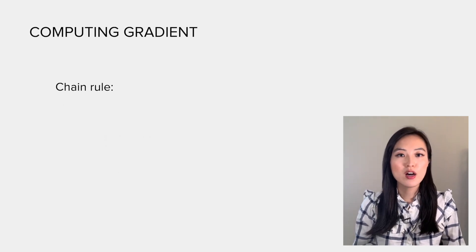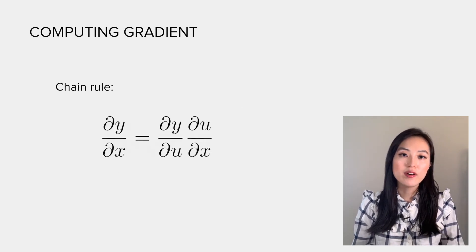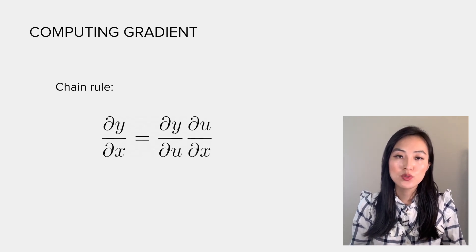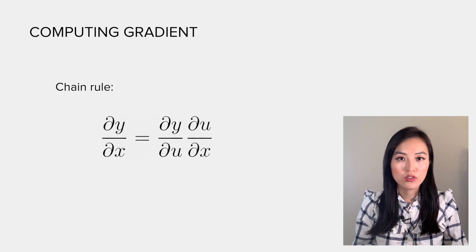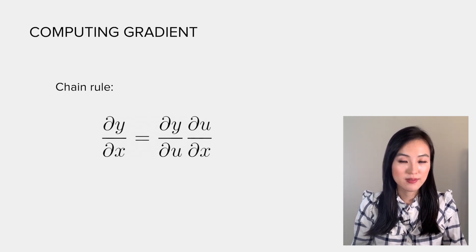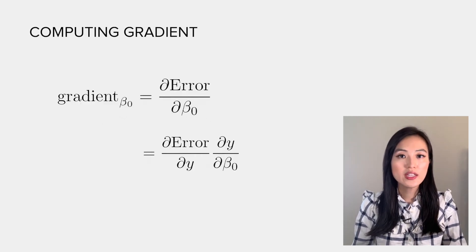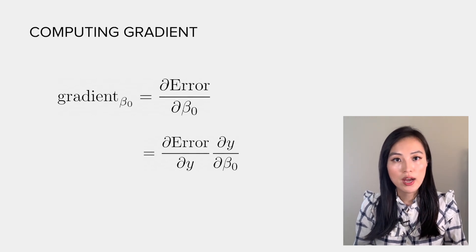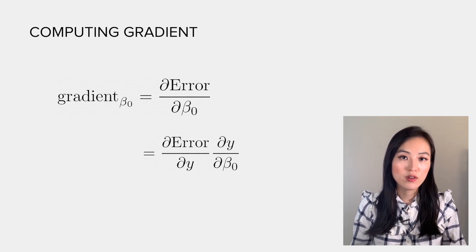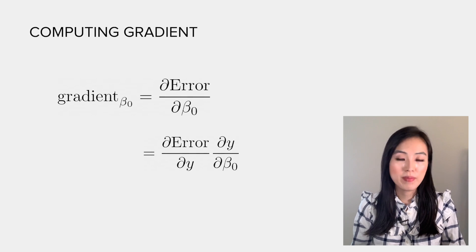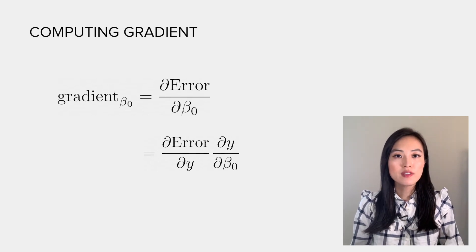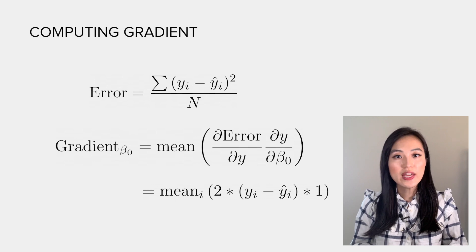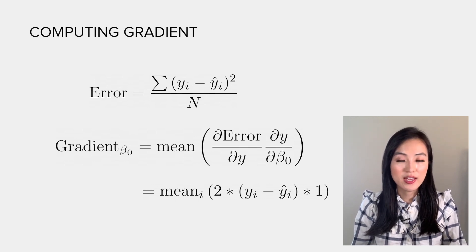A quick recap of the chain rule: derivative of y with respect to x equals the derivative of y with respect to u multiplied by the derivative of u with respect to x. So the gradient of beta_0—we have defined the error before, which is the mean squared error—so we can get the exact form of the gradient at beta_0.